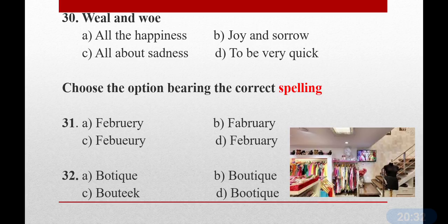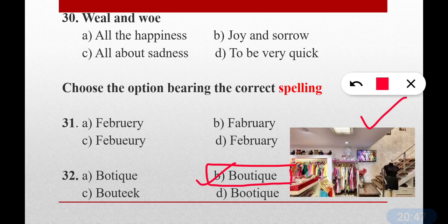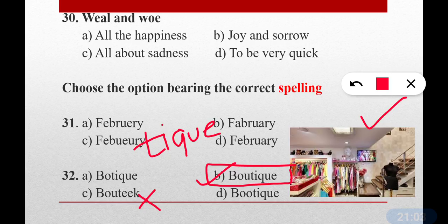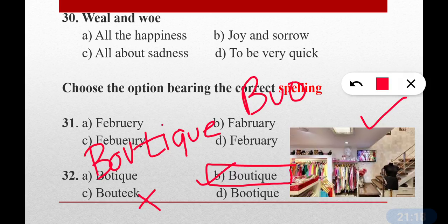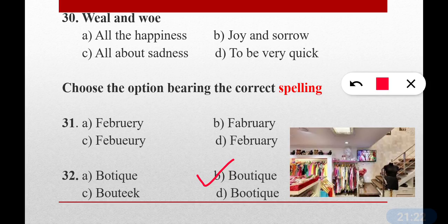Question number thirty-two: What is the correct spelling of boutique — where fashionable clothes are kept? The correct spelling is option B — B-O-U-T-I-Q-U-E. Remember the starting: B-O-U. Just like 'lieutenant' is not spelled as it sounds (L-I-E-U-T-E-N-A-N-T), boutique is also different from its pronunciation. The key is to remember B-O-U at the start.